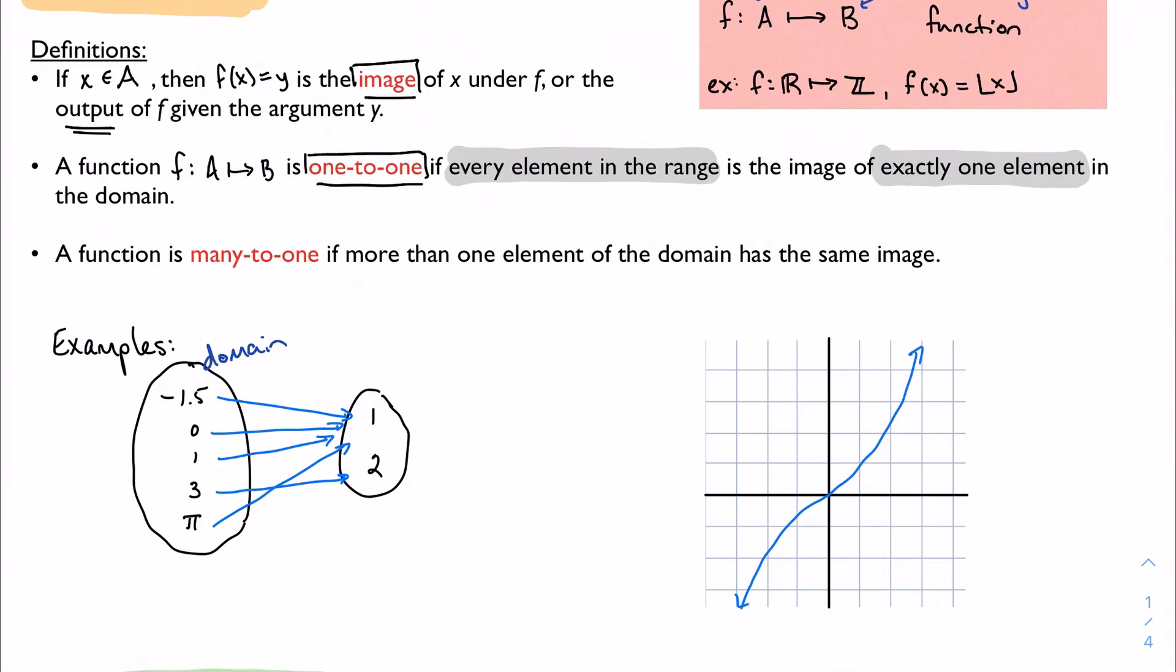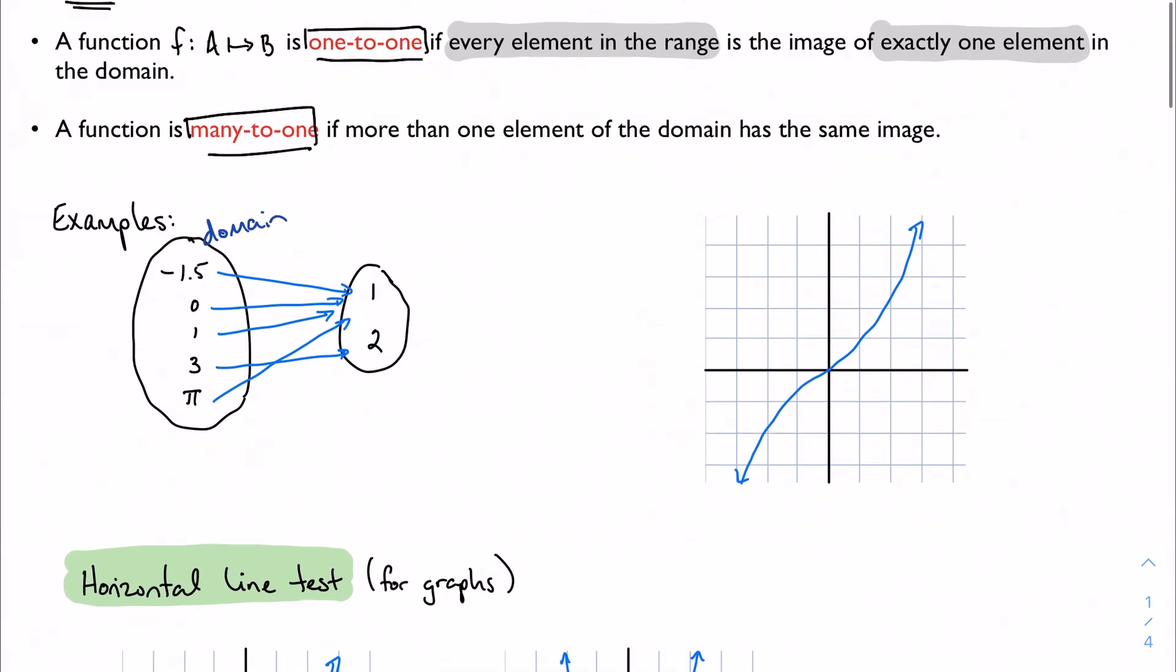On the flip side, we have what the book calls many-to-one, and that's just if I have multiple x's being mapped to the same y, which would be my first example here. My domain has five distinct values, but four of them are being mapped to the number one. So this is many-to-one, or more importantly, just not one-to-one.